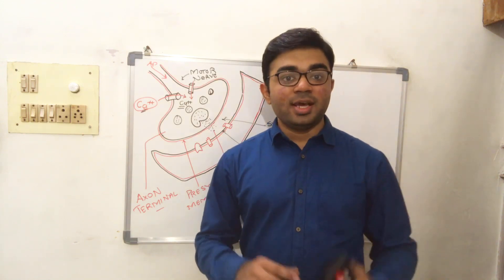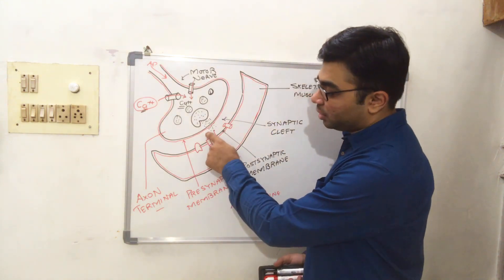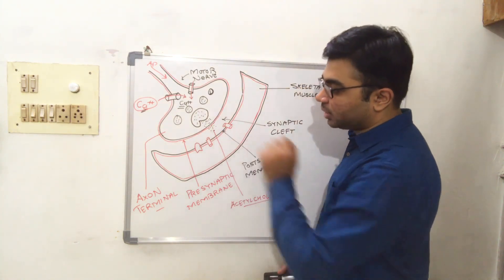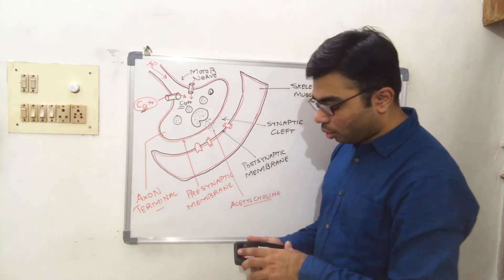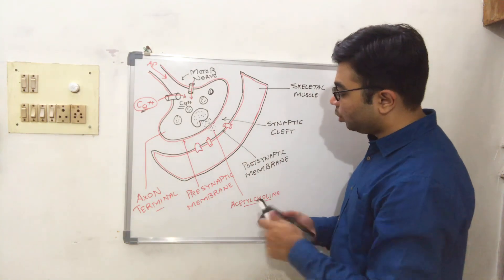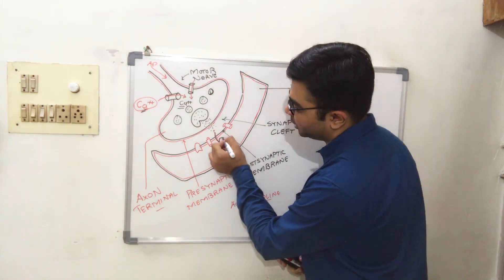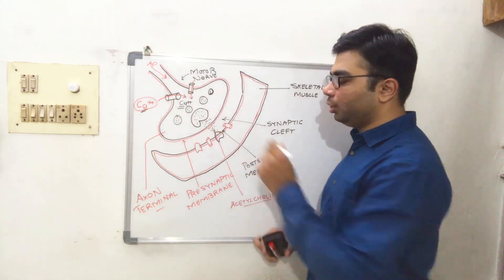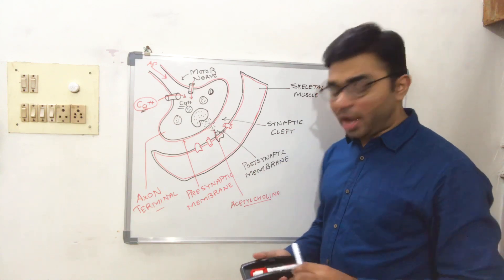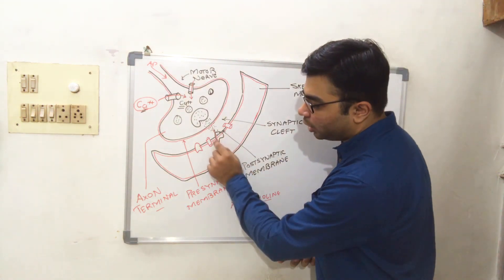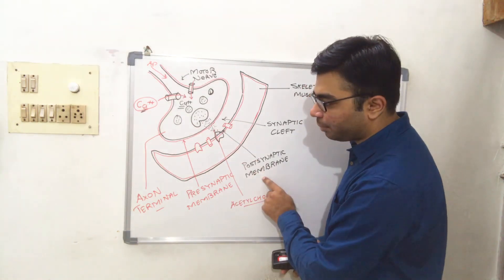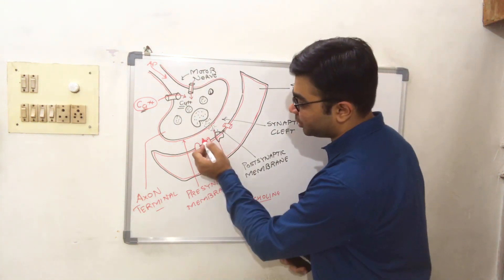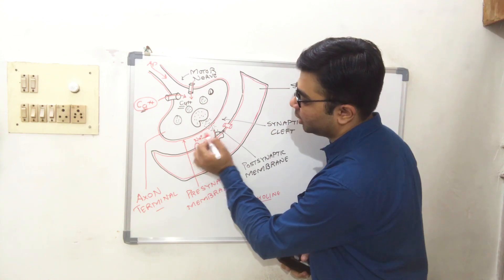After releasing from the presynaptic membrane and passing through the synaptic cleft, acetylcholine attaches to the receptors present over the postsynaptic membrane. When acetylcholine binds with those receptors, it helps in the opening of ligand-gated sodium channels present on the postsynaptic membrane.